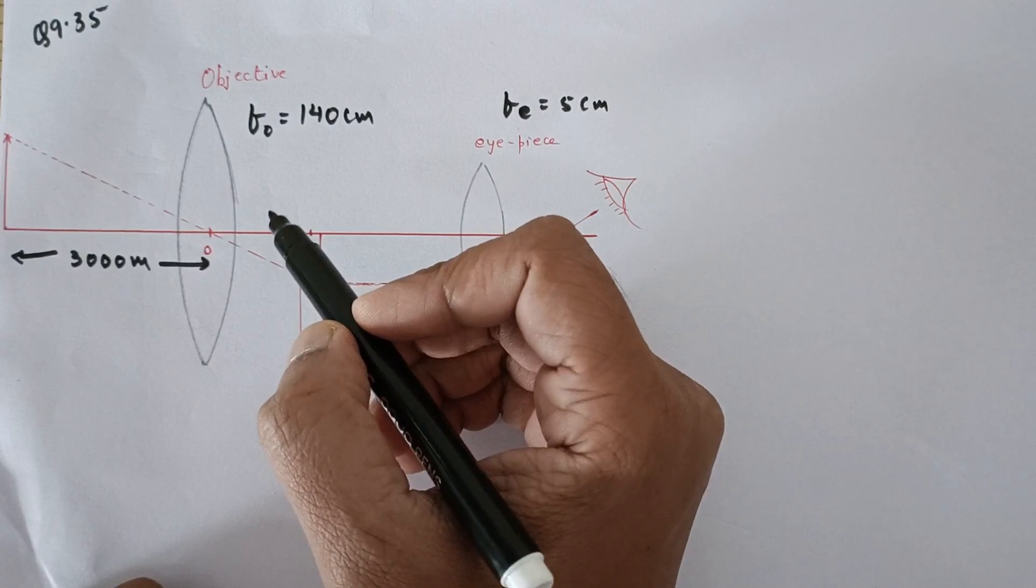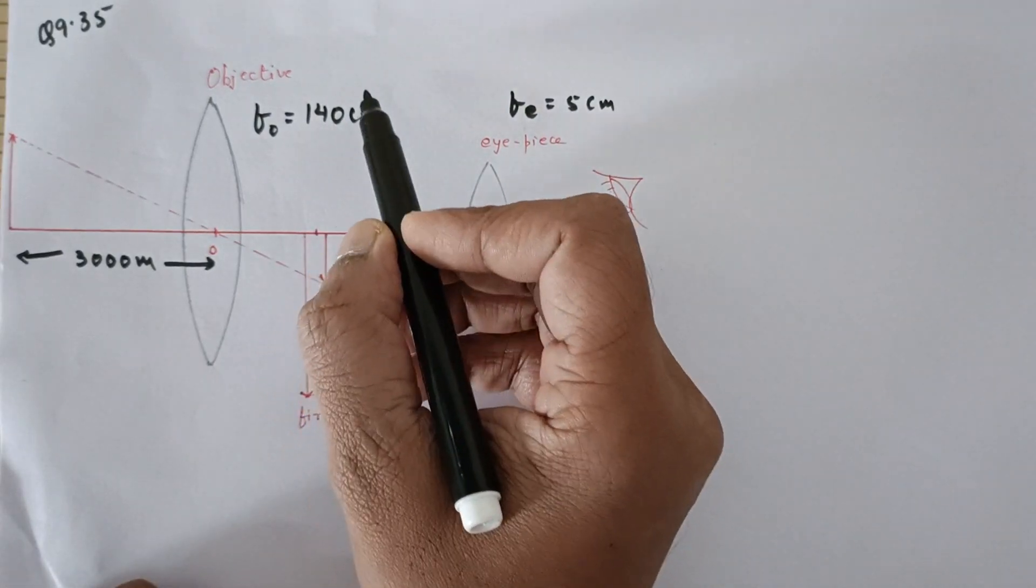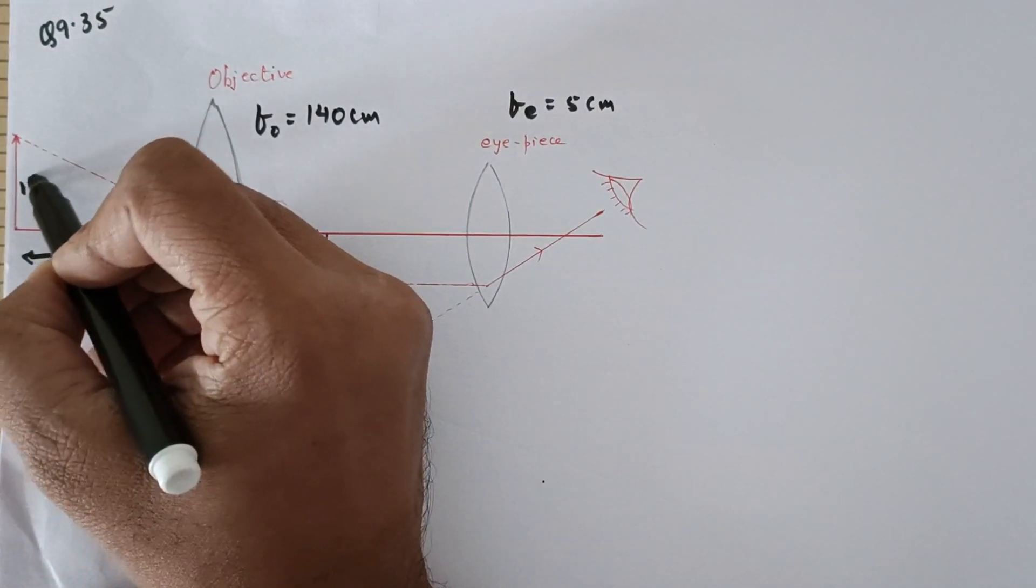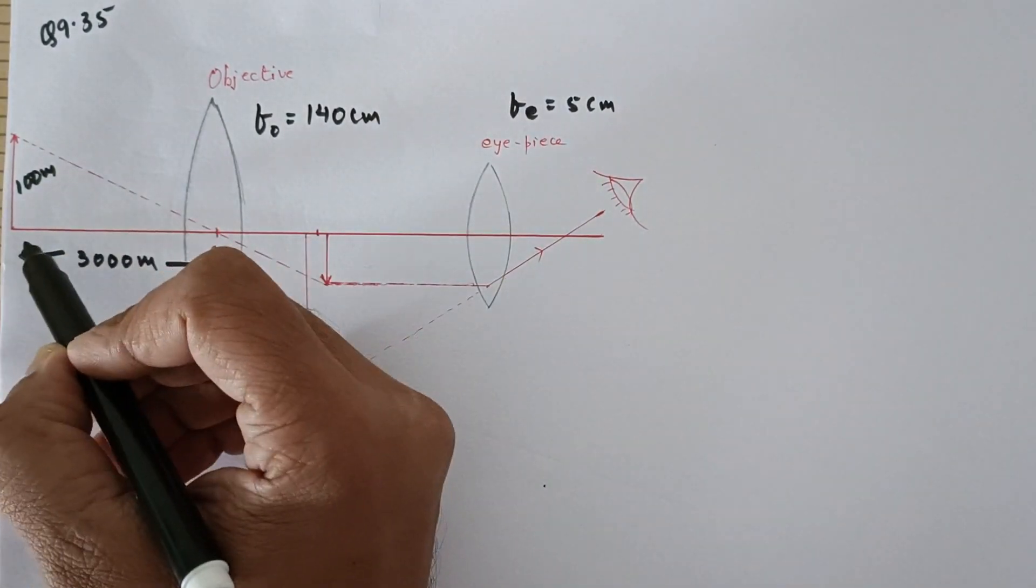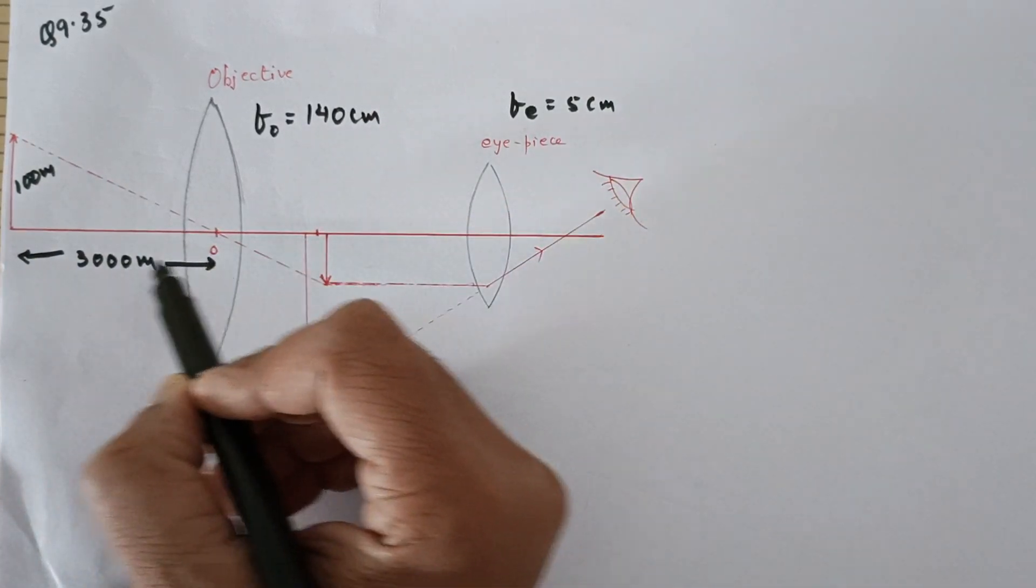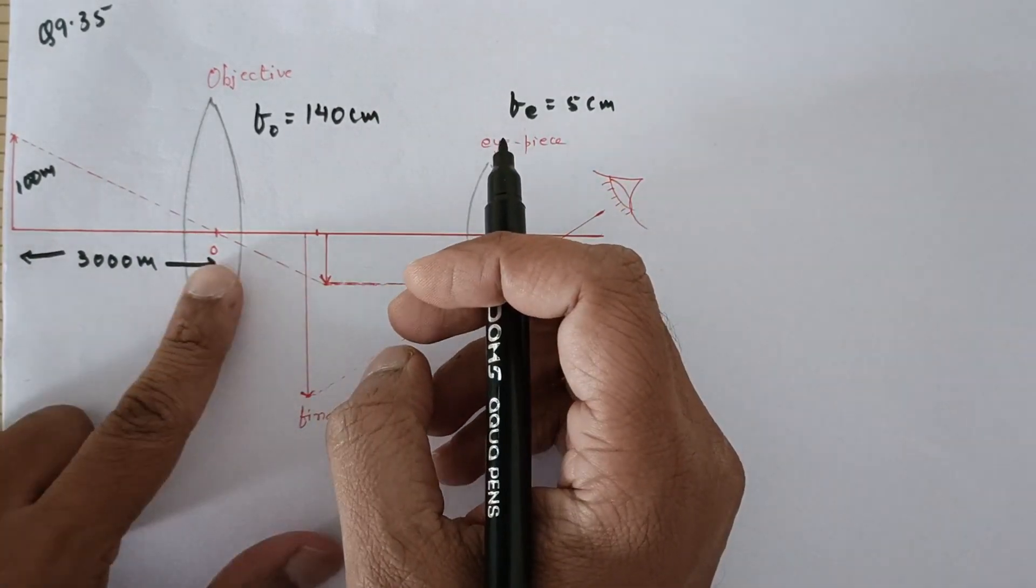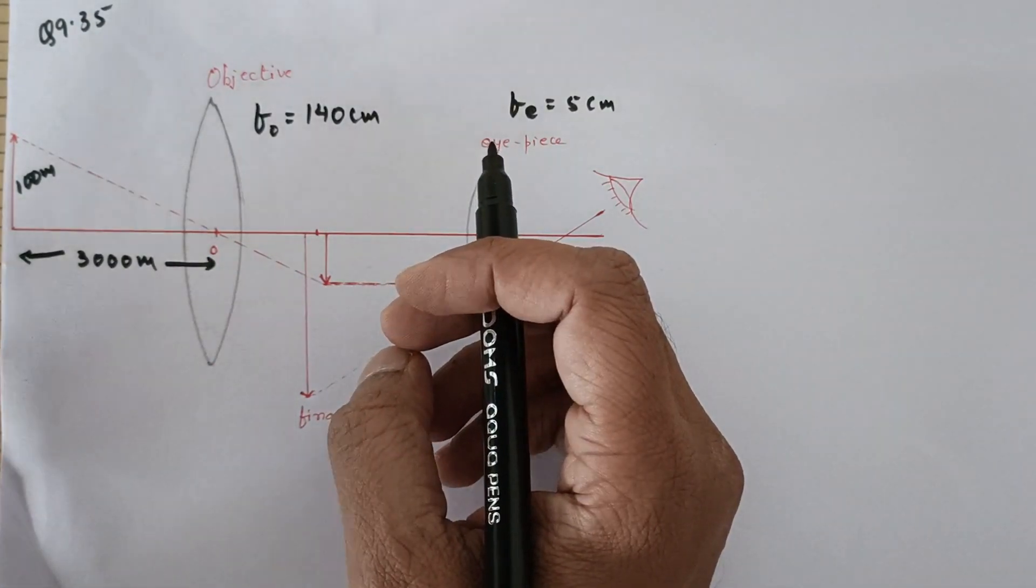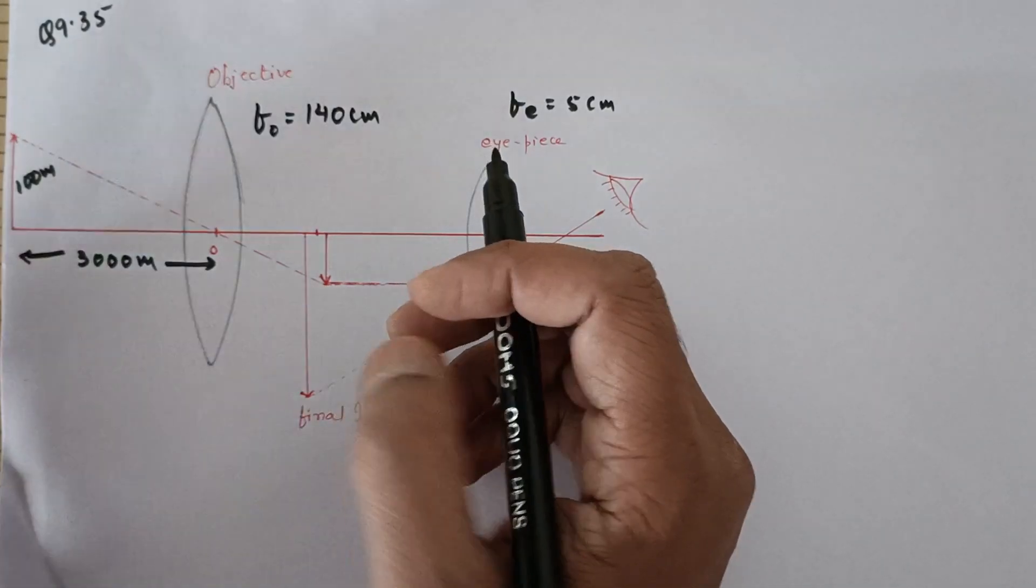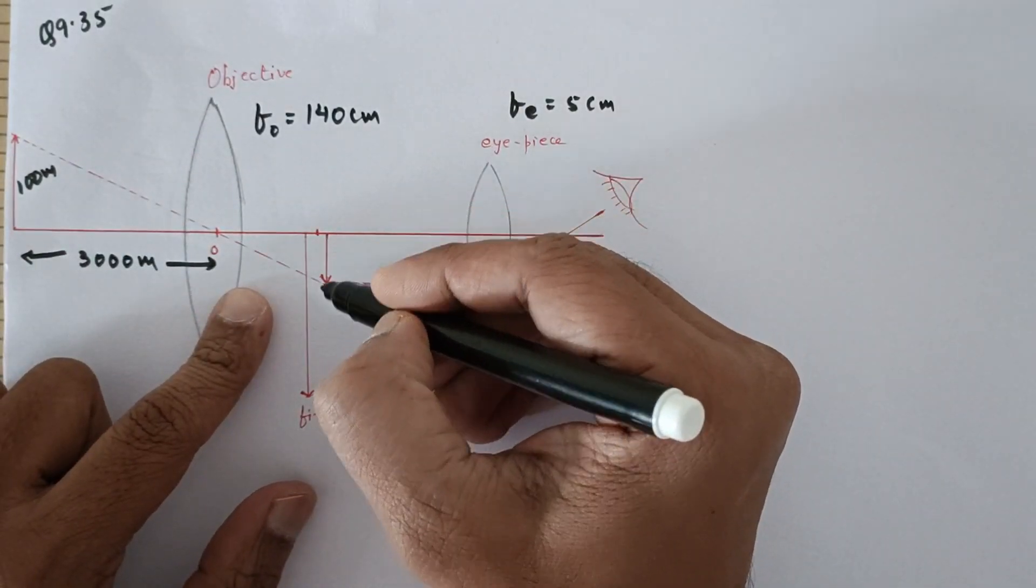You can actually see that with respect to the focal length, this object, a tall building whose height is 100 meters, is very far away. With respect to this, this distance is very very far away. So you can consider this object to be very far away, almost at infinity. Under that situation you will get an image at the focal plane.